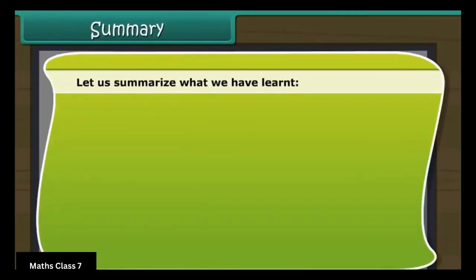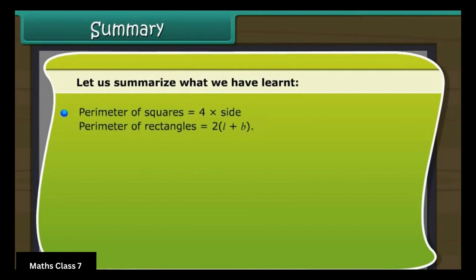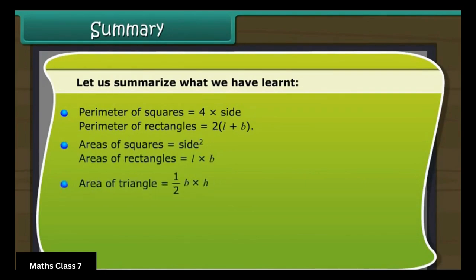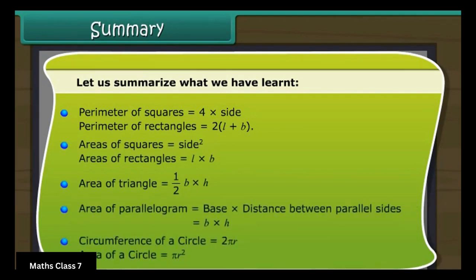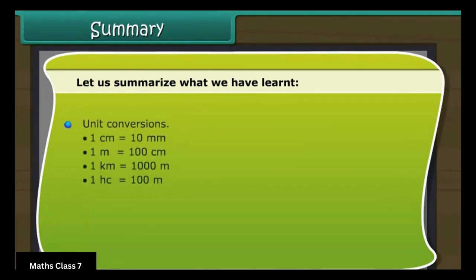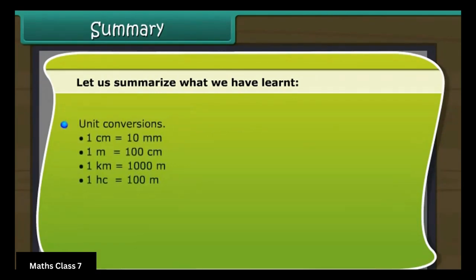Let us summarize what we have learned: perimeter of squares and rectangles, areas of squares and rectangles, area of triangle, area of parallelogram, circumference and area of a circle, and unit conversions.